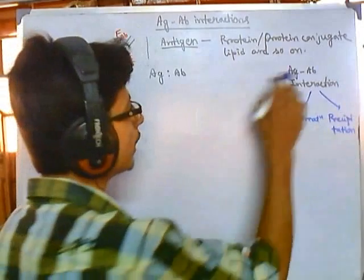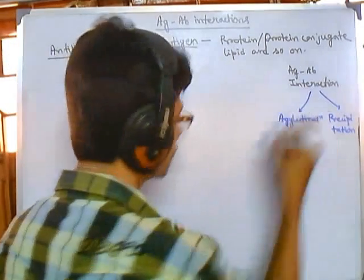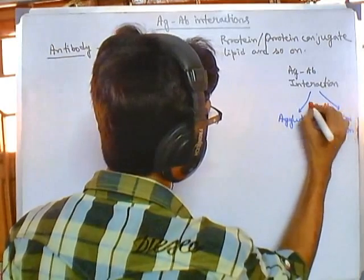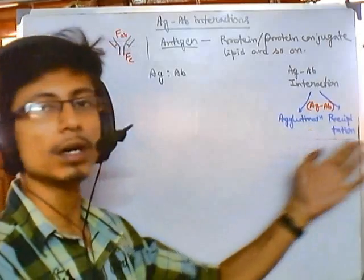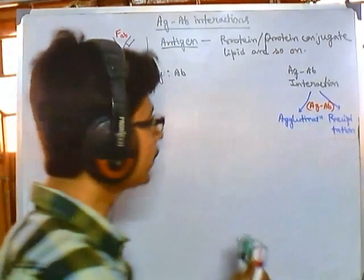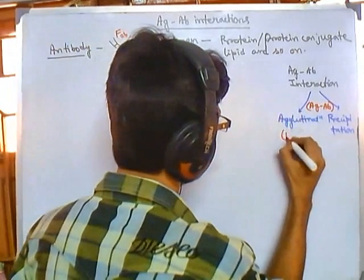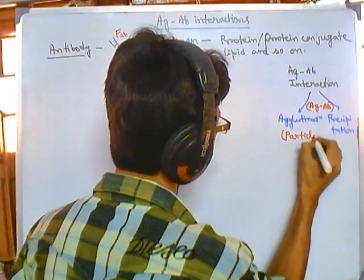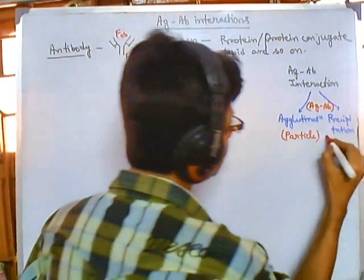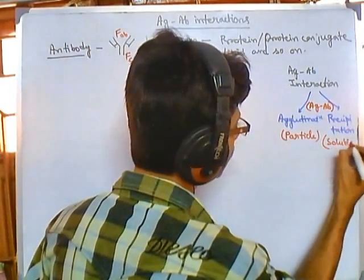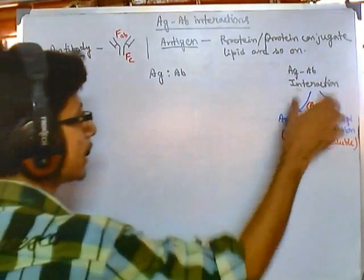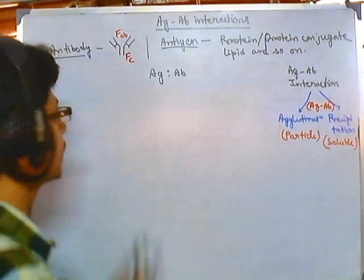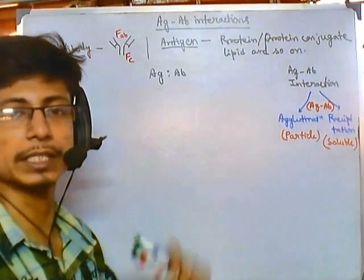These are the two different fates of antigen-antibody interaction, which occur via the antigen-antibody complex. Whenever they produce this complex, they can end up with either agglutination or precipitation. If the antigen is particle-type, agglutination occurs; if it is soluble-type, precipitation occurs. For this kind of complex formation, the ratio and concentration of antigen and antibody are very, very important.